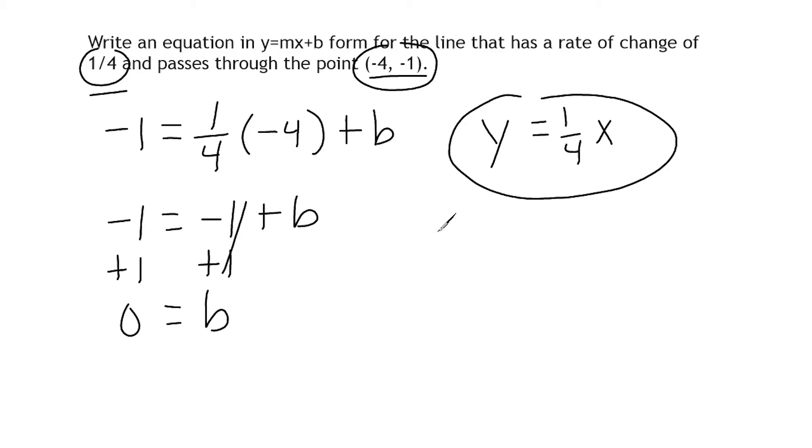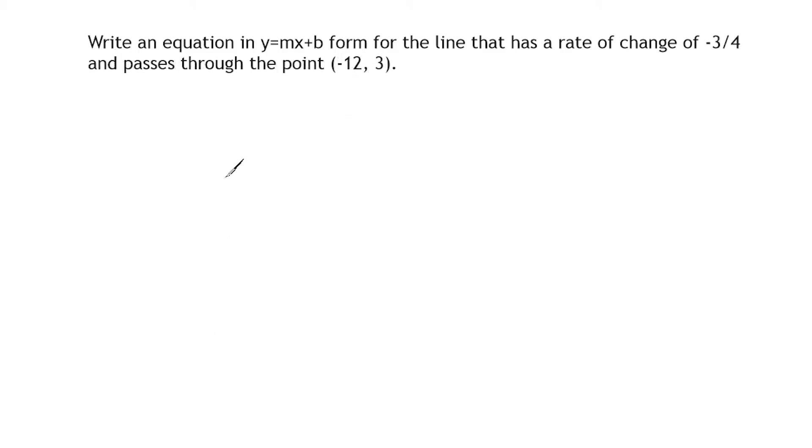All right, let's go ahead and do another example. Okay, so straight away we're going to start with our y value, which is 3 equal to the given slope, which is negative three-fourths in this case, which is multiplied by x. And in this case our x is negative 12.